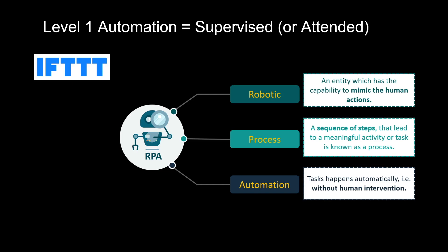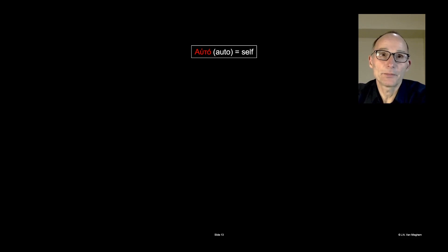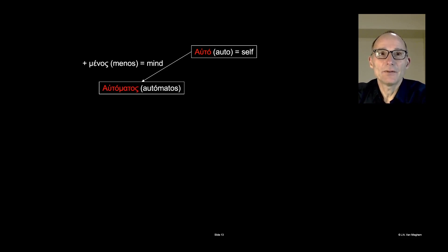Yet automation requires a little more nuance. What does it really mean to say that tasks happen automatically? One could think it means without human intervention, but let's look at where the word comes from. Adding a bit of Greek: the word auto means self, and if we add to that menos, which means mind, we get the word automatos.